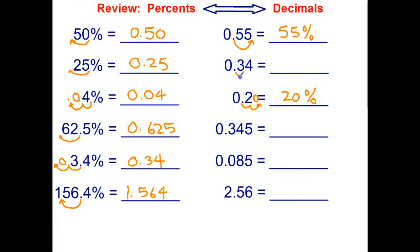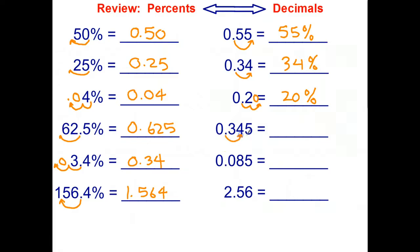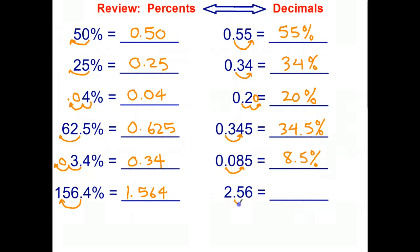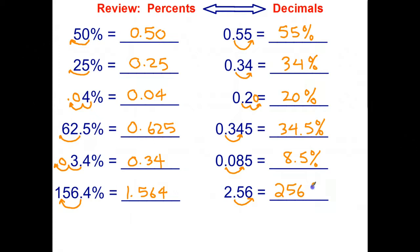Welcome back. So 0.34 will just be 34 percent. In this case the decimal point moves between the four and the five, so 34.5 percent. Here it moves back between the eight and the five giving us 8.5 percent. And this number is bigger than one, so the percent will be bigger than 100 percent — that's 256 percent. So that's how we convert percents to decimals and decimals back to percents.